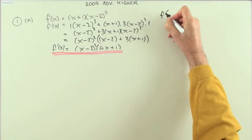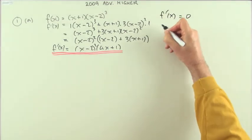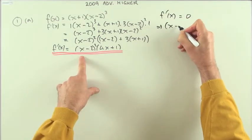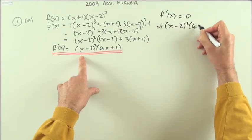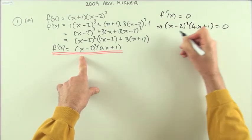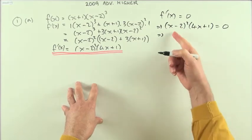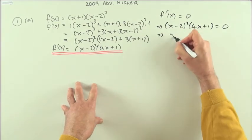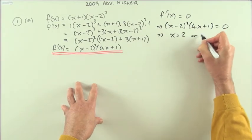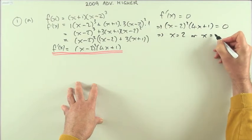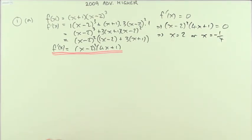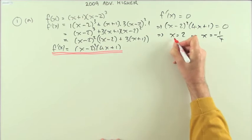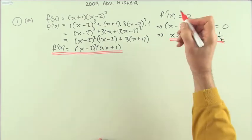Then, f dashed x equals zero means that this product equals zero, in which case either of its factors can equal zero, so I've got a double root here at x equals 2, or a single root here at x equals negative 1 quarter. That's the first part.